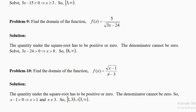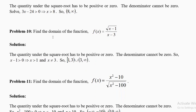Find the domain of f(x) = 5/√(3x − 24). Here, 3x − 24 must be strictly greater than 0 — square root of a negative is not allowed, and 1 by 0 is also not allowed. So x > 8. The domain is (8, +∞), an open interval. At x = 8: 3(8) − 24 = 0, giving 5/0 which is undefined, so 8 is not allowed.